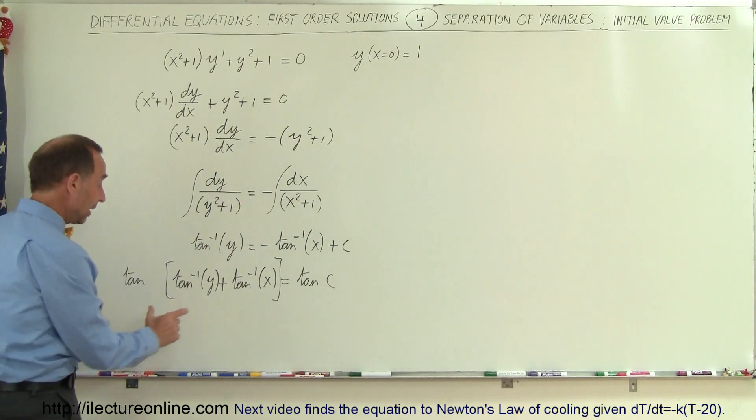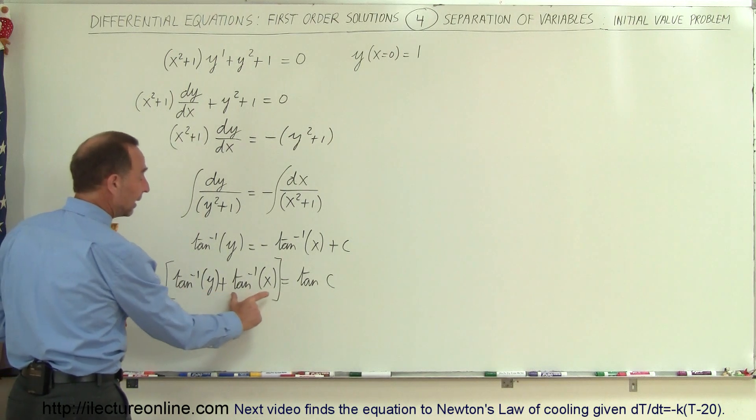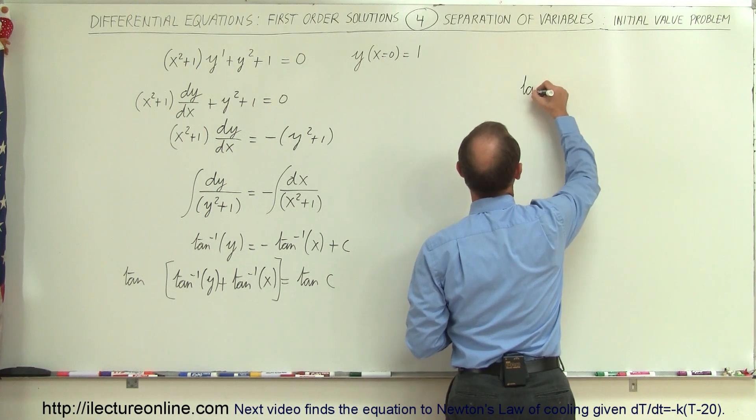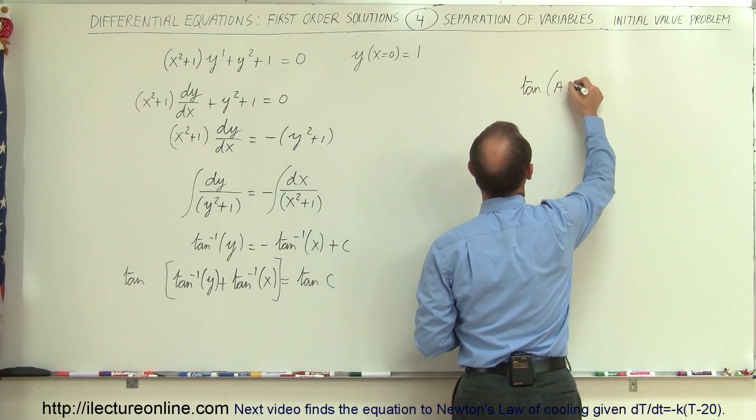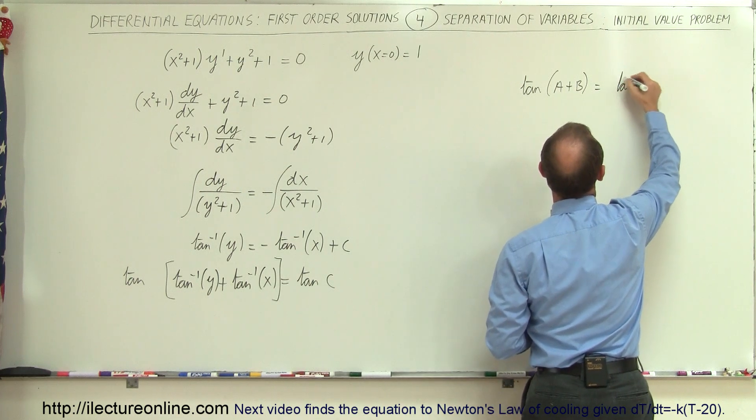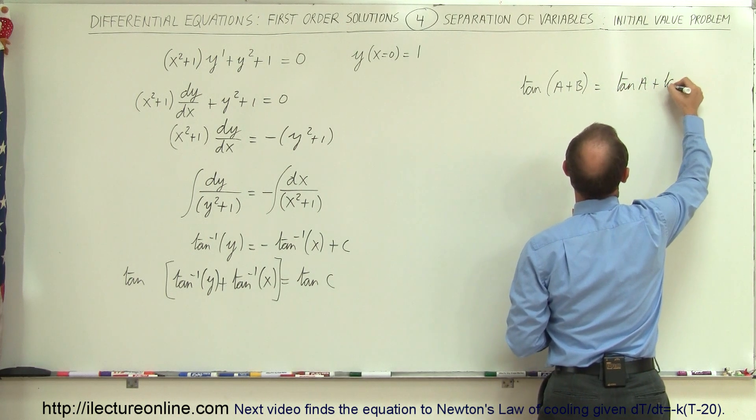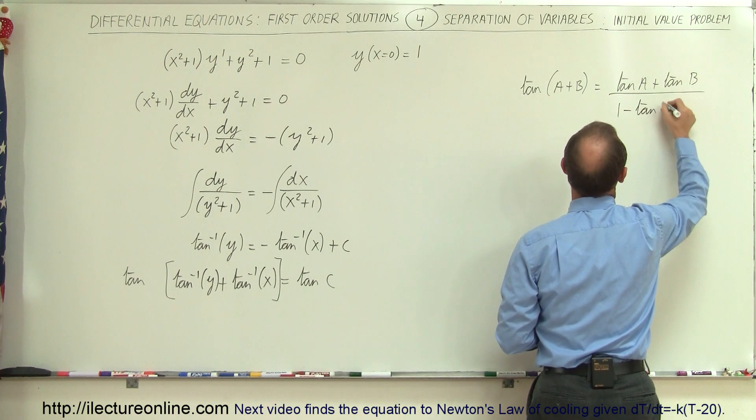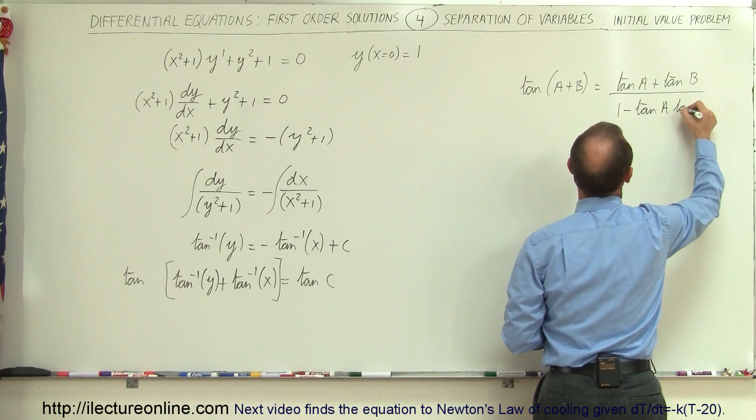Now you have to remember that this really represents an angle and that represents an angle, so in other words we can say that if we take the tangent of an angle a + b, that can be written as the tangent of a